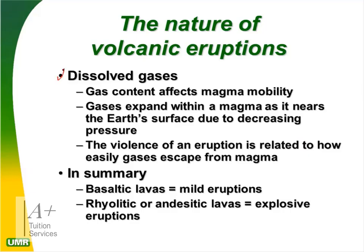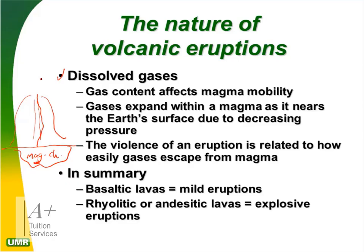Dissolved gases determine viscosity and magma mobility. Gas expands within a magma as it nears the earth's surface due to decreasing pressure. When magma is below the surface it is under very high pressure; as it rises up the volcano that pressure releases. The violence of an eruption is related to how easily gases escape from magma — if gases do not escape, it becomes violent.